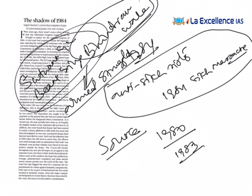Four months after Operation Blue Star, on 31st October 1984, Indira Gandhi was assassinated by her two Sikh bodyguards, Satwant Singh and Beant Singh, in Delhi. This triggered the 1984 anti-Sikh riots.